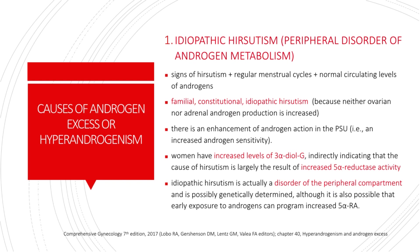Several studies have documented that some women so diagnosed have subtle increases in androgen production and metabolism. However, the more important way to characterize this disorder where androgens are normal or very slightly increased is that there is an enhancement of androgen action in the PSU. Women have increased levels of 3-alpha-diol-G, indirectly indicating that the cause of hirsutism is largely the result of increased 5-alpha-reductase activity, and idiopathic hirsutism is actually a disorder of the peripheral compartment and is possibly genetically determined, although early exposure to androgens can also program increases in 5-alpha-reductase activity.